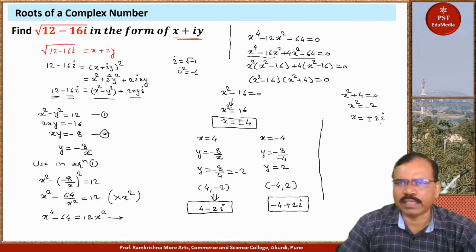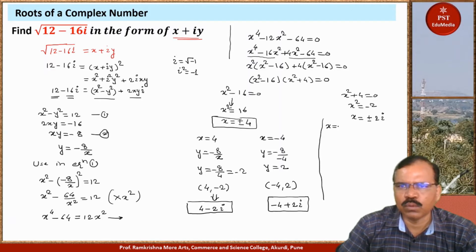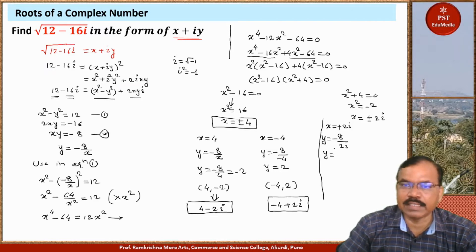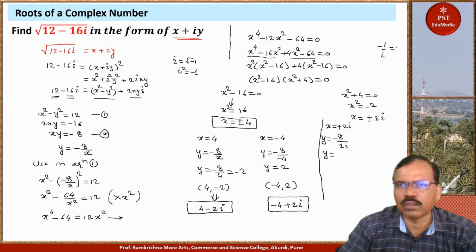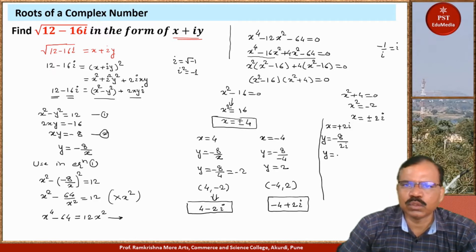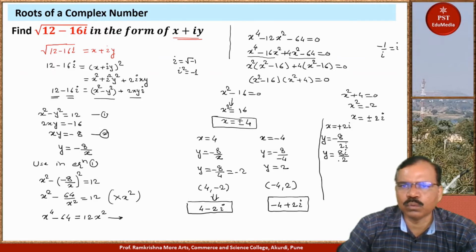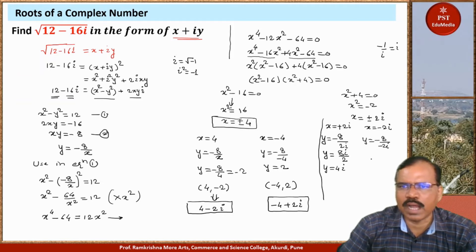Now checking the complex solutions: if x equals plus 2i, then y equals minus 8 upon 2i. Since minus 1 upon i equals i (because i squared equals minus 1), we get y equals 8i upon 2 equals 4i. If x equals minus 2i, then y equals minus 8 upon minus 2i, giving y equals minus 4i.